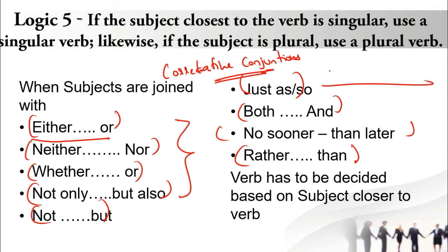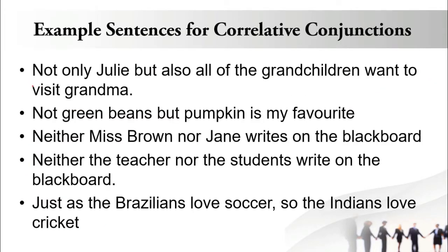Let's directly take up an example. The first sentence says: 'Not only Julie but also all of the grandchildren want to visit grandma.' So 'not only but also' is a co-relative conjunction. The moment the sentence has 'not only but also,' the entire scenario is actually changing.